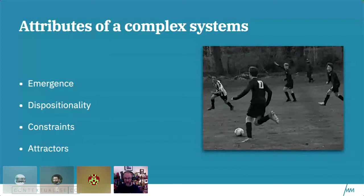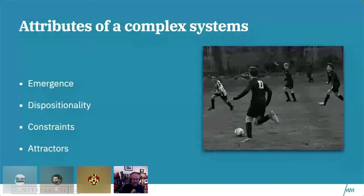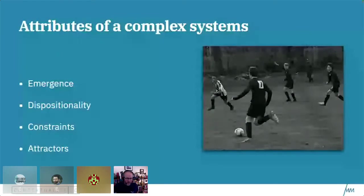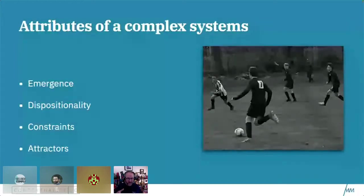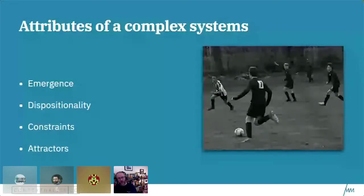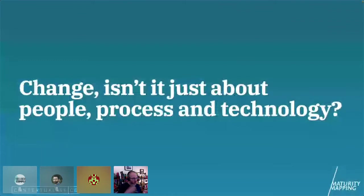Systems are managed within constraints. With football there are constraints: there are lines, rules, numbers of people, the shape of the ball. Imagine if you started to change those constraints — how would the game of football change? If the lines were different, the pitch was bigger — what would that mean? What if the rules allowed you to tackle with two feet above the knee? That would completely change the game. The constraints are the things that keep football being played the way it's played. And then finally there are attractors — the things we go for — with winning being the main attractor.